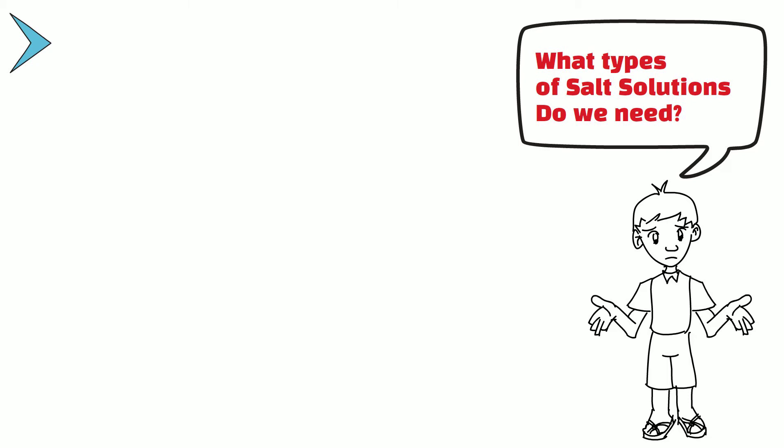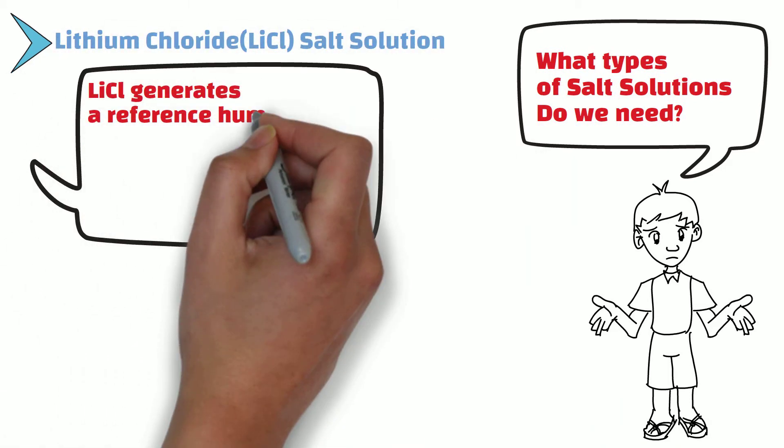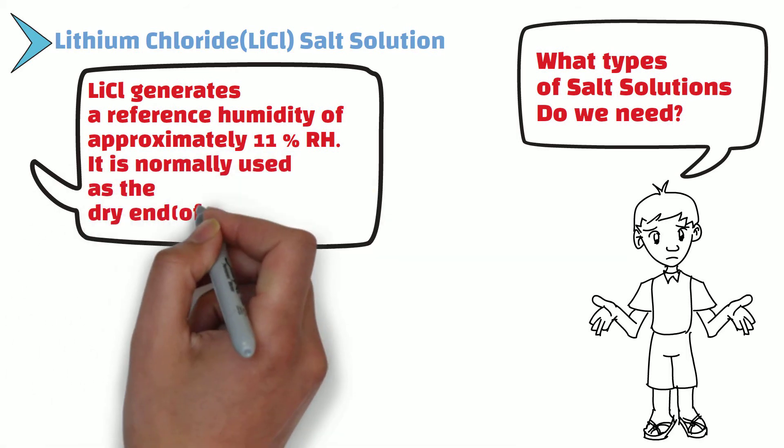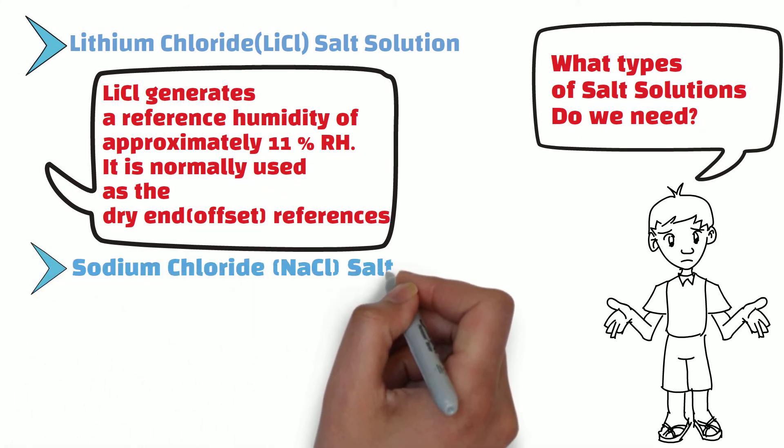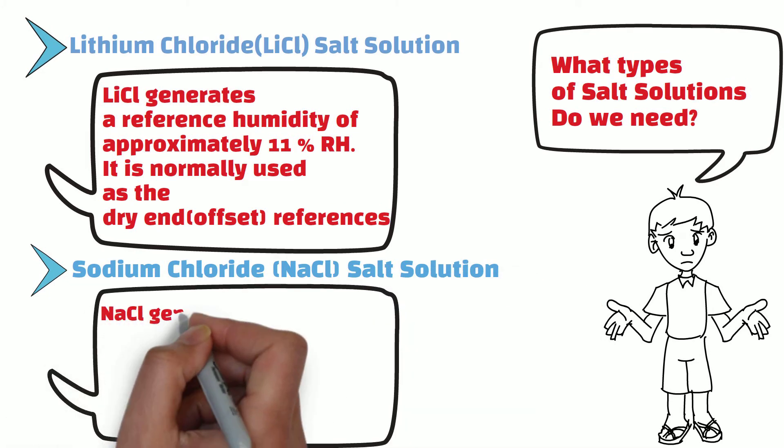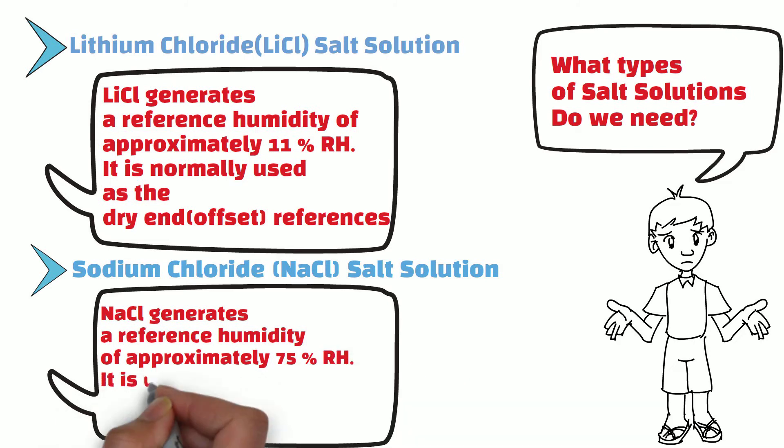Lithium chloride generates reference humidity of approximately 11% RH, and it is normally used as dry end or offset references. And sodium chloride generates reference humidity of approximately 75% RH, and it is normally used as wet end or gain references.